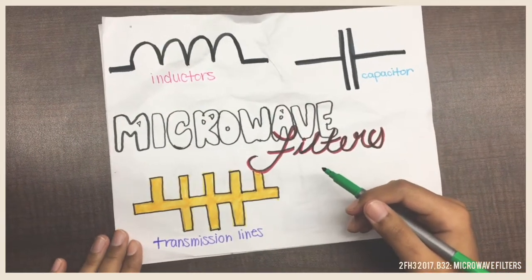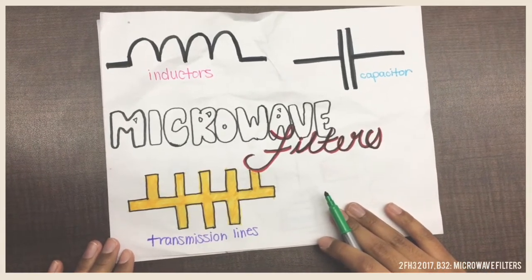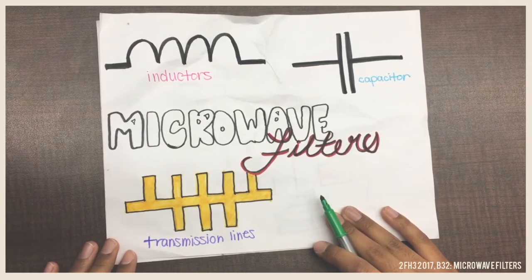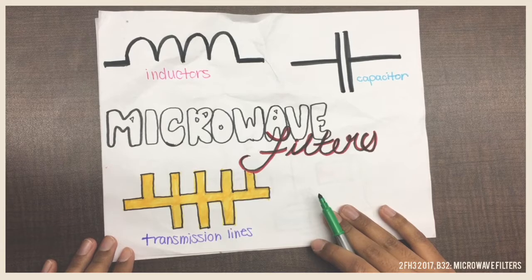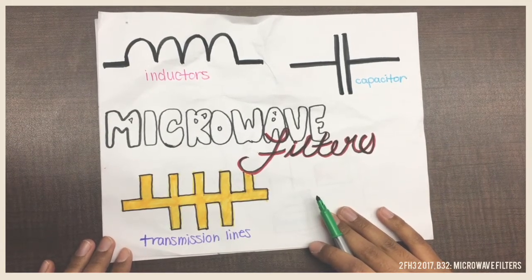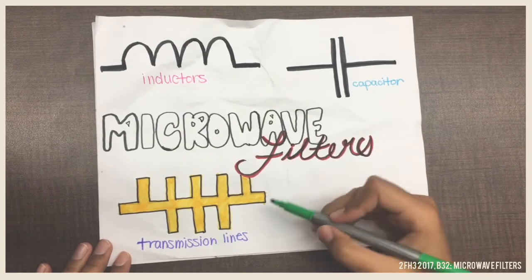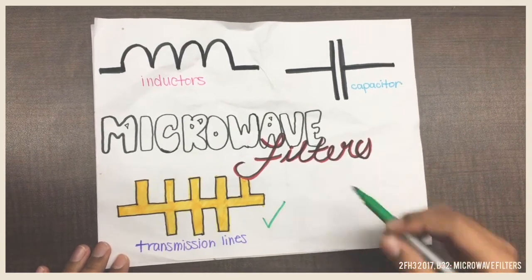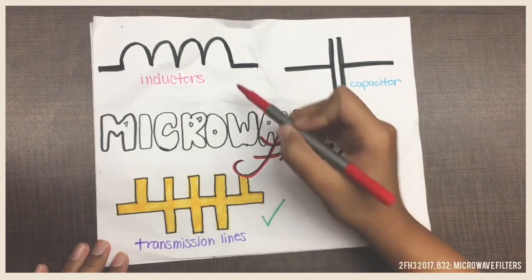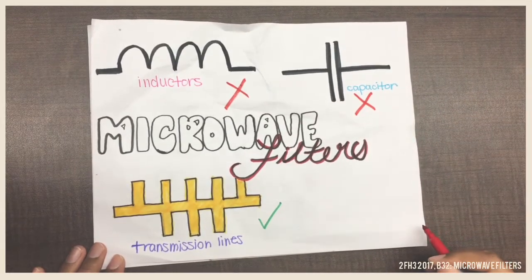A microwave filter is a filter that operates at microwave frequencies. It can perform the same functions as the filters mentioned before, except at microwave frequencies. This small difference makes the implementation of a microwave filter different from electronic filters because of the use of special circuit elements like transmission lines, which are used to implement microwave filters instead of inductors and capacitors.